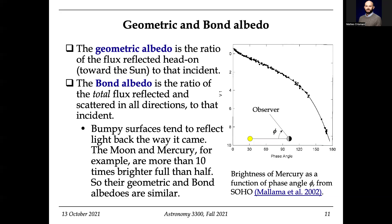It's important to remember that was for visible light. All of these conversations are wavelength dependent. For example, bumpy surfaces tend to reflect light back the way it came for visible light, but that might not be the case for radio. Radio is really good at showing us where things are rough versus smooth because of how well smooth areas reflect back directly.